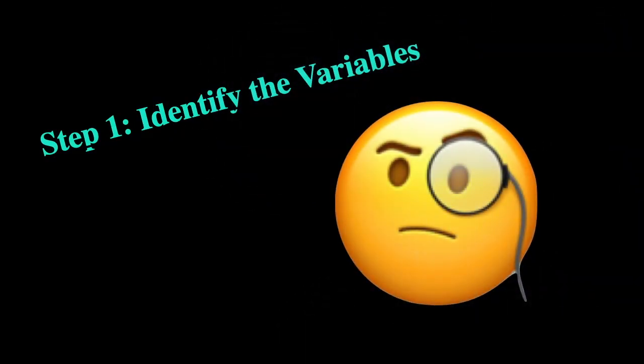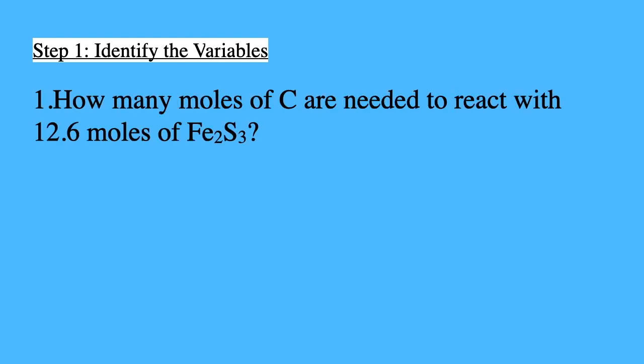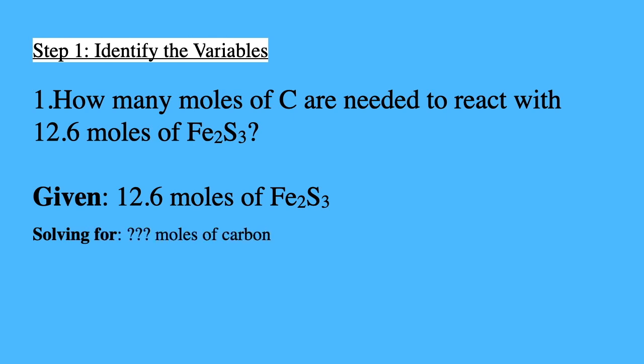There are 4 steps to solving this problem. Step 1 is identify the variables. We need to go back to the problem in order to identify each of those variables. So what we're going to do is write down what's given. What's given is 12.6 moles of Fe2S3.